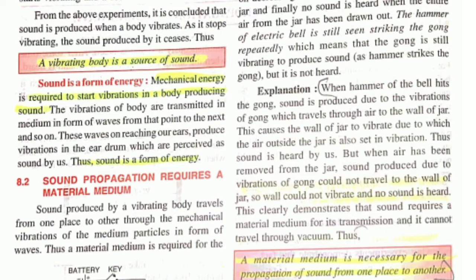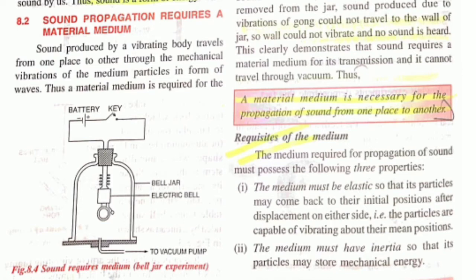For sound propagation, it always requires a material medium. By material medium we mean a substance — a solid, gas, or liquid. Propagation of sound means the traveling of sound. The condition for propagation of sound is that a material medium is necessary for the propagation of sound from one place to another.